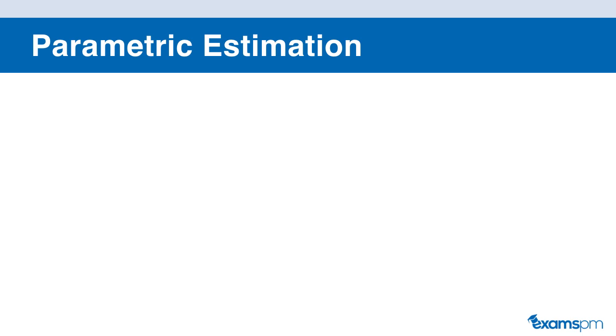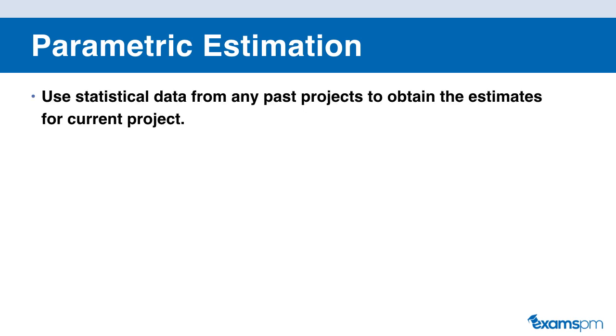Next up, we have the parametric estimation. So in parametric estimation, you take statistical data from any past projects or industry benchmarks and apply it to your current project. For example, the cost of painting per square foot. So this is usually more accurate than analogous estimation. However, it also does take a longer time as well. This estimation technique can be definitive or rough order of magnitude depending on the quality of data and effort involved.